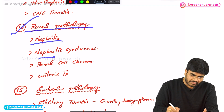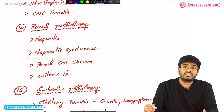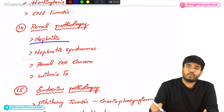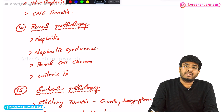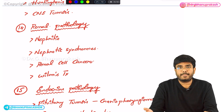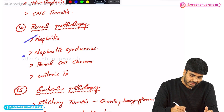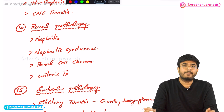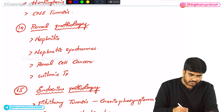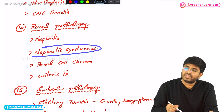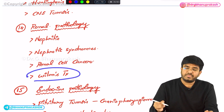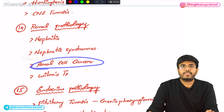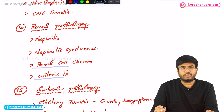In renal pathology, know about nephritic syndromes and nephrotic syndromes. In nephrotic syndrome, minimal change disease is treated with steroids. In nephritic syndrome, know post-streptococcal glomerulonephritis and its histological appearance. Know what spike and dome appearance is seen in, tram-track appearance is seen in, and which nephrotic syndrome is associated with HIV or AIDS. Know Kimmelstiel-Wilson nodules. Know the differences between all four nephritic and four nephrotic syndromes, plus renal tumors: Wilms' tumor in children and renal cell carcinoma.